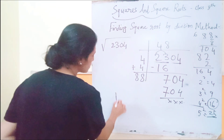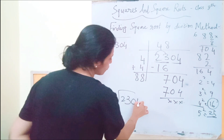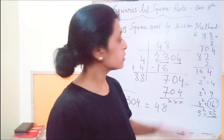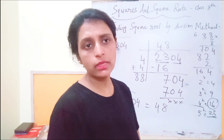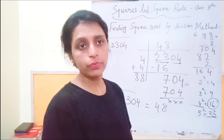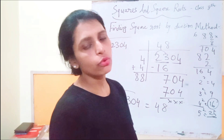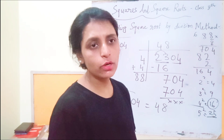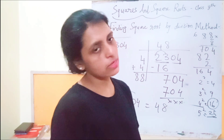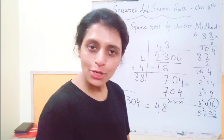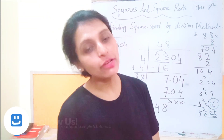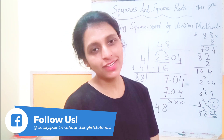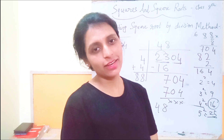So the square root of 2304 is 48. Hope children you understood the division method to find the square root. If you have any doubt, write to me in the comment box. And if you are fine with the explanation, don't forget to hit the like button and kindly subscribe to the channel. Thank you!